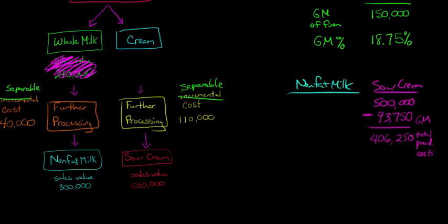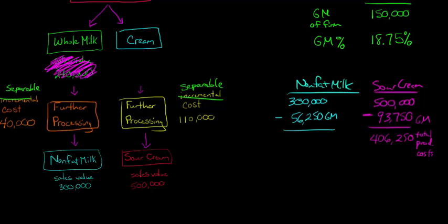Now we'll do the same thing with the nonfat milk. We've got $300,000 in final sales value, and we apply the 18.75% gross margin percentage to get the gross margin of $56,250 for the nonfat milk. We deduct that from the sales value — we're backing out the gross margin from the final sales value — to get the total production cost of $243,750 for the nonfat milk.